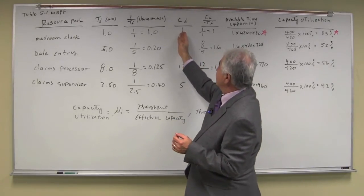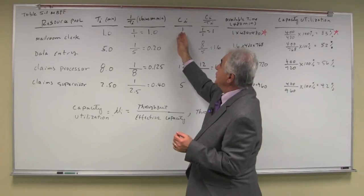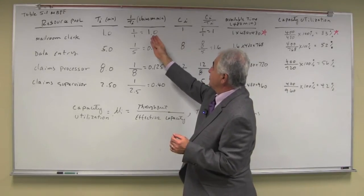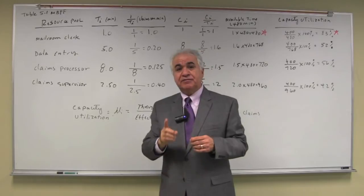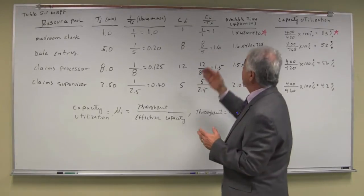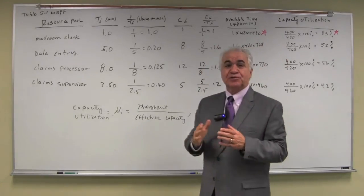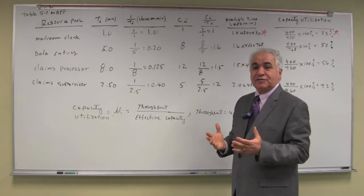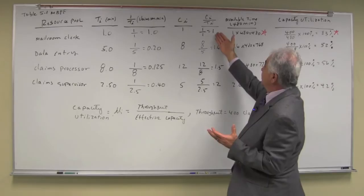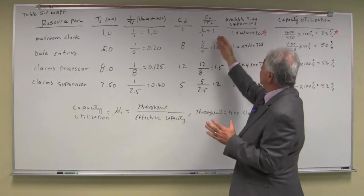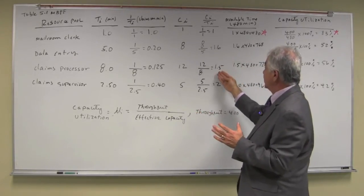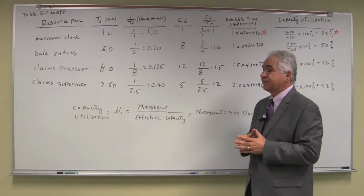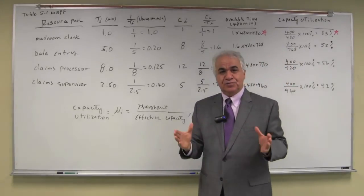If we multiply the number of units in the resource pool times the effective capacity of one unit, then we'll have the effective capacity of a resource pool. So the effective capacity of the mayor and clerk pool is 1, 1.6, 1.5, and 2 for the claims supervisor resource pool.